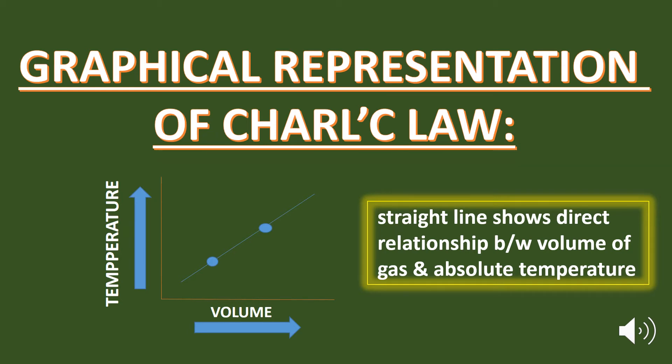Graphical representation of Charles' law. Graphically, a plot of the volume against the absolute temperature of a gas at a constant pressure is a straight line. As you can see here in the graph, there is a straight line which shows the direct relationship between the volume and the absolute temperature. It means that as the temperature increases, the volume of a gas also increases.